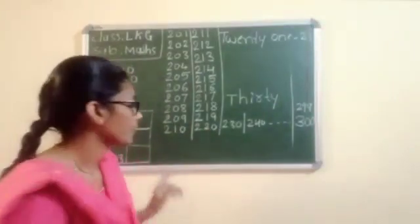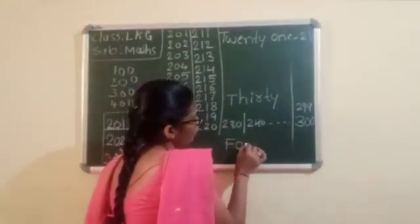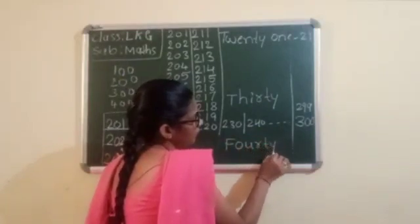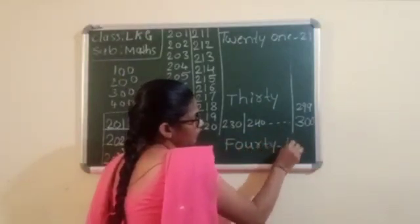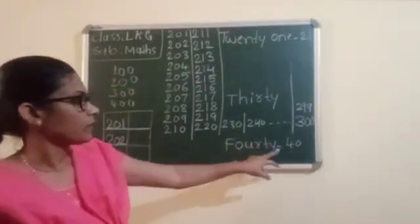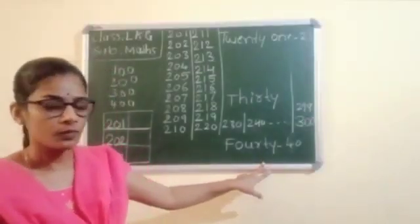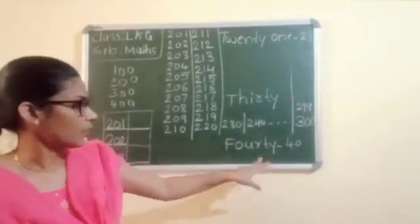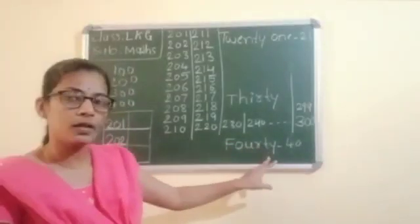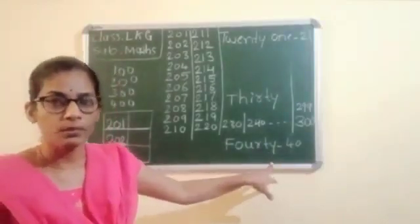That is 40. F, O, U, R, T, Y. You write F, O, U, R, T, Y — and also F, O, R, T, Y. Two spellings are correct. F, O, R, T, Y is also correct, and F, O, U, R, T, Y is also correct.